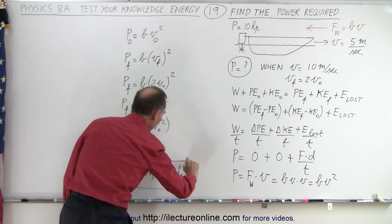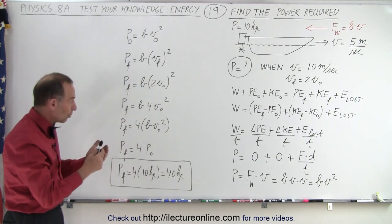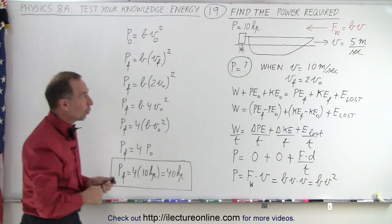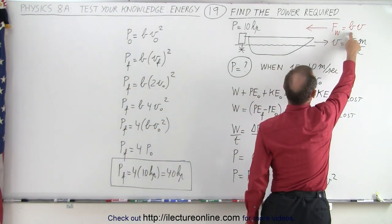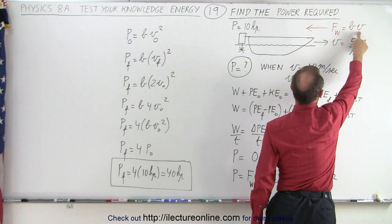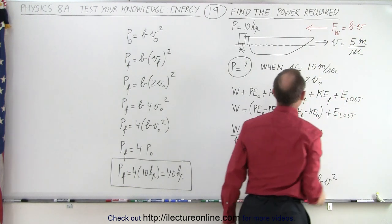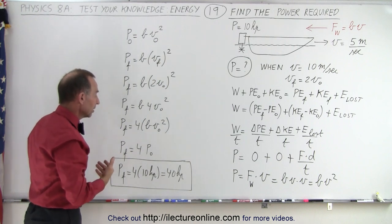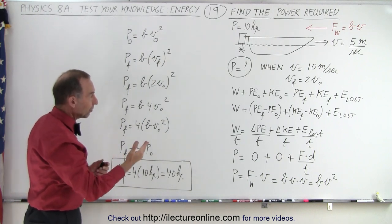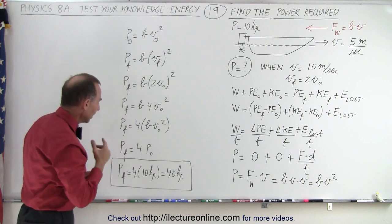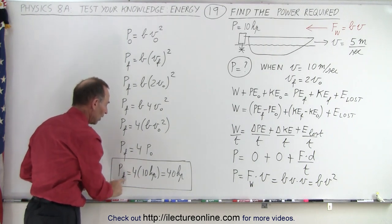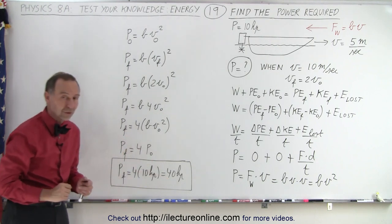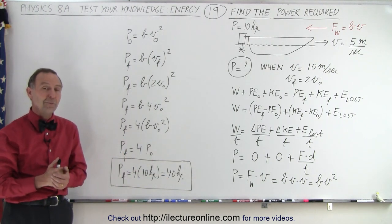So here we have a case where the motor is pushing against the resistive forces of the water. Notice that the force is not constant but increases as a function of velocity. When you double the velocity, you get double the force, so not only do you have higher velocity but also higher resistive force. Therefore the power required is not twice but four times the original horsepower — and that is how we solve this.